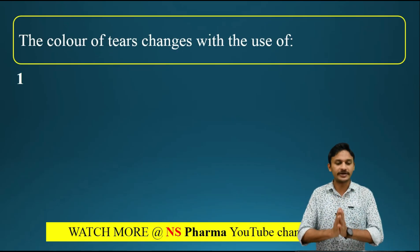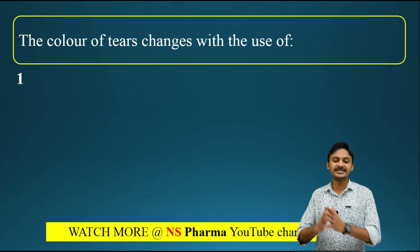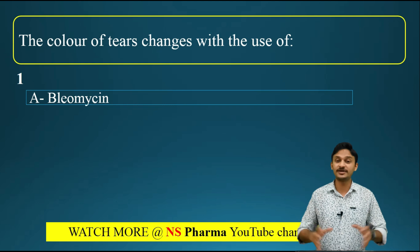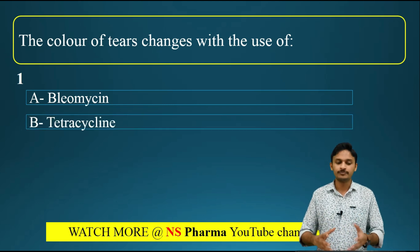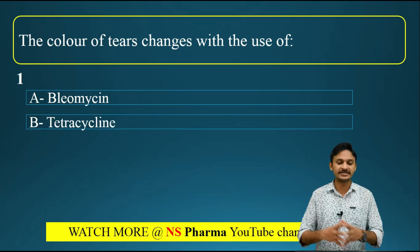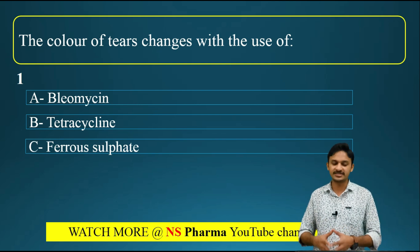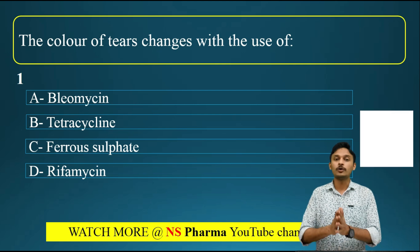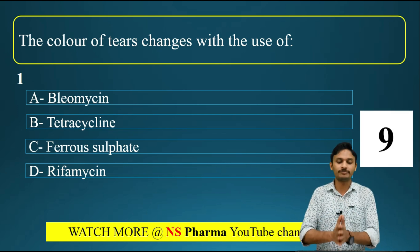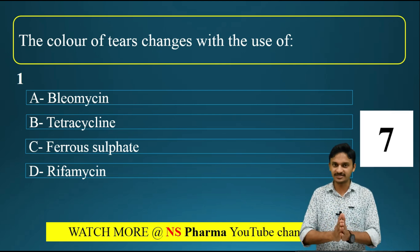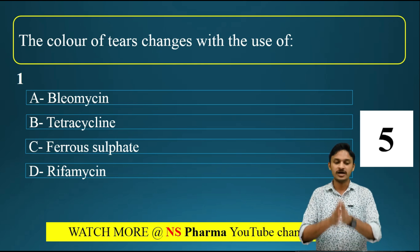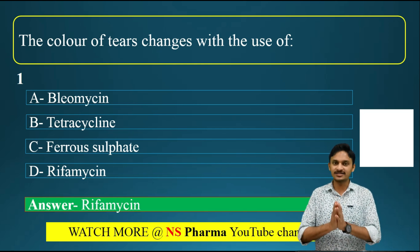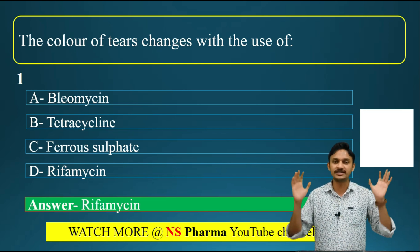The first question: the color of tears changes with the use of which drug? Options are: option A - bleomycin, option B - tetracycline, option C - ferrous sulfate, option D - rifamycin. The correct answer for this question is option D - rifamycin.